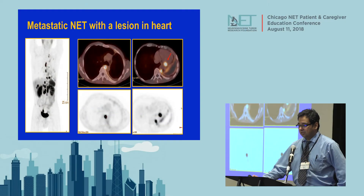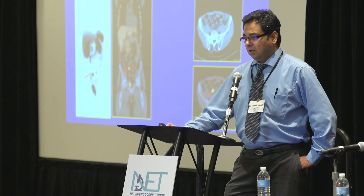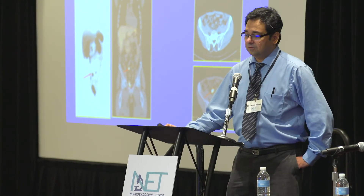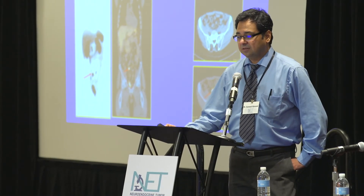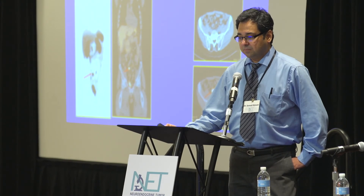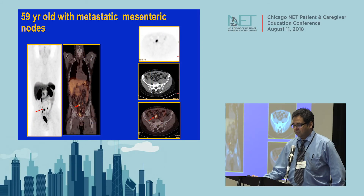Another patient had multiple lesions including one in the left ventricle of the heart, which required special attention and was not seen on other imaging modalities. Another case showed a DOTATATE-avid lesion in the patient's mesenteric node. These lymph nodes were surgically resected and the patient was monitored thereafter.